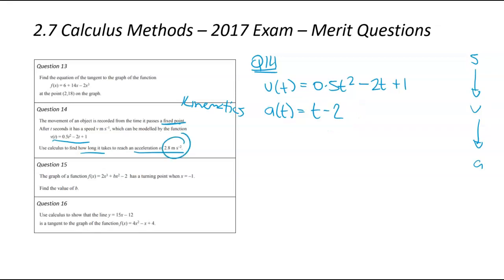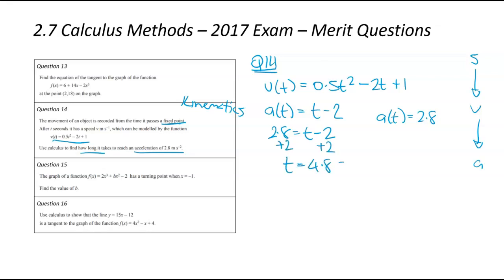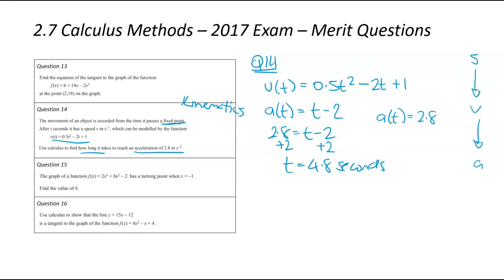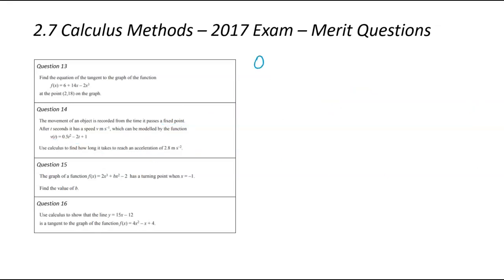We're interested in when the acceleration is 2.8. Substituting: 2.8 equals t minus 2, then plus 2 both sides gives t equals 4.8 seconds. So after 4.8 seconds, the acceleration of that object will be 2.8 metres per second squared.